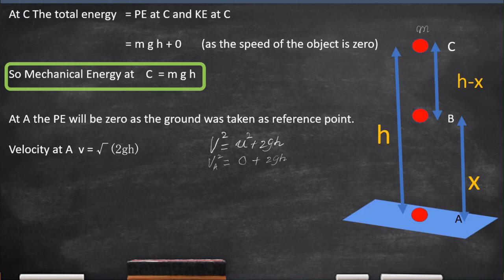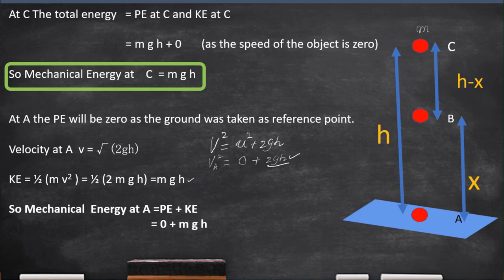Now, to calculate the kinetic energy, we have to make use of V². That means we have to substitute this 2gh in place of V². Then, we will get Mgh. In that way, the potential energy and kinetic energy at A is also Mgh only.